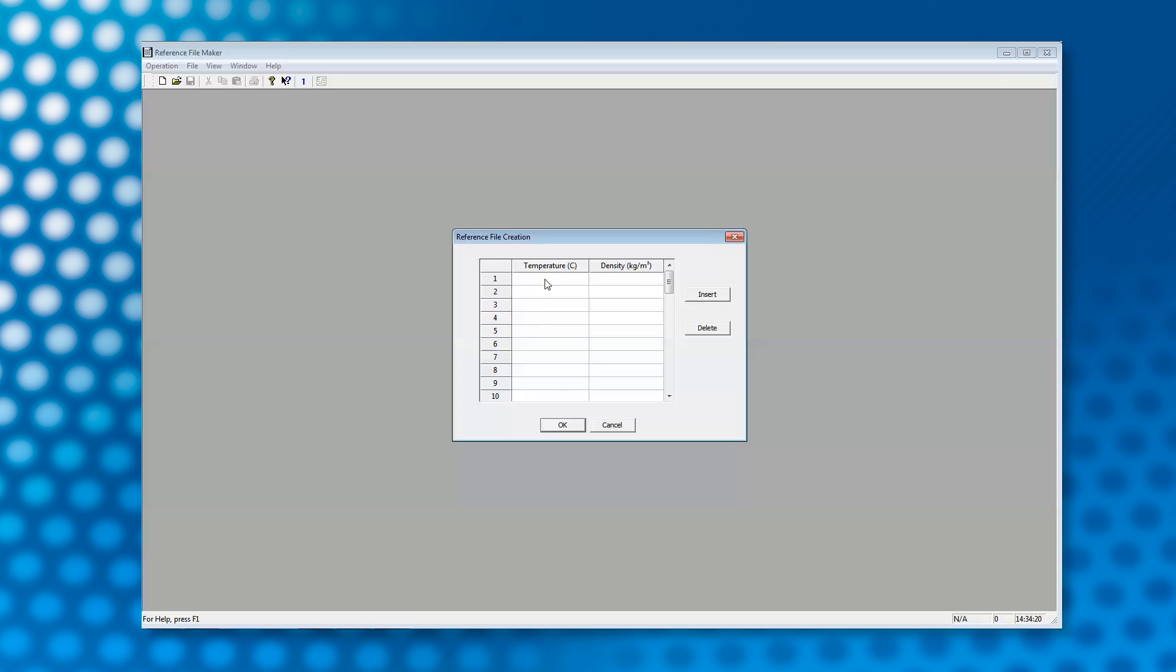Then we need to generate a density file for the unknown sample. We open the ref maker file in the instrument folder and select density as the property we want to define. It is best to have the density at the complete temperature range, but in most cases it is safe to assume the changes in the density are not significant.